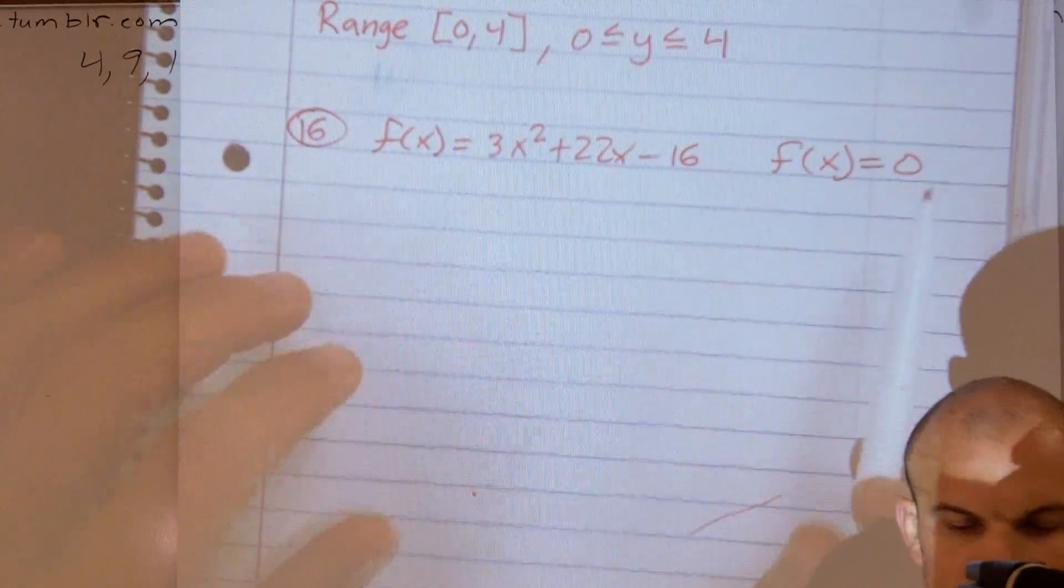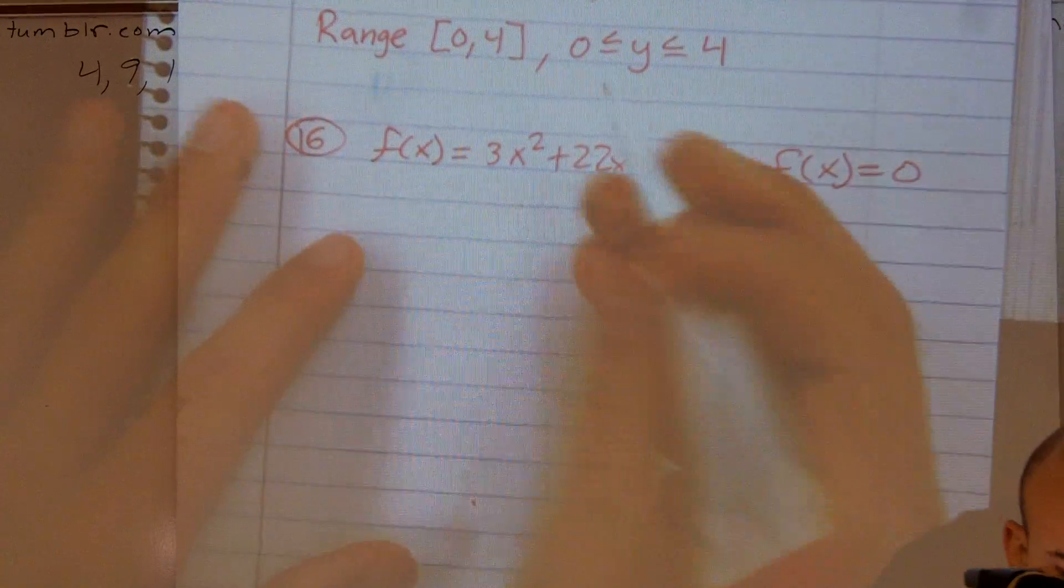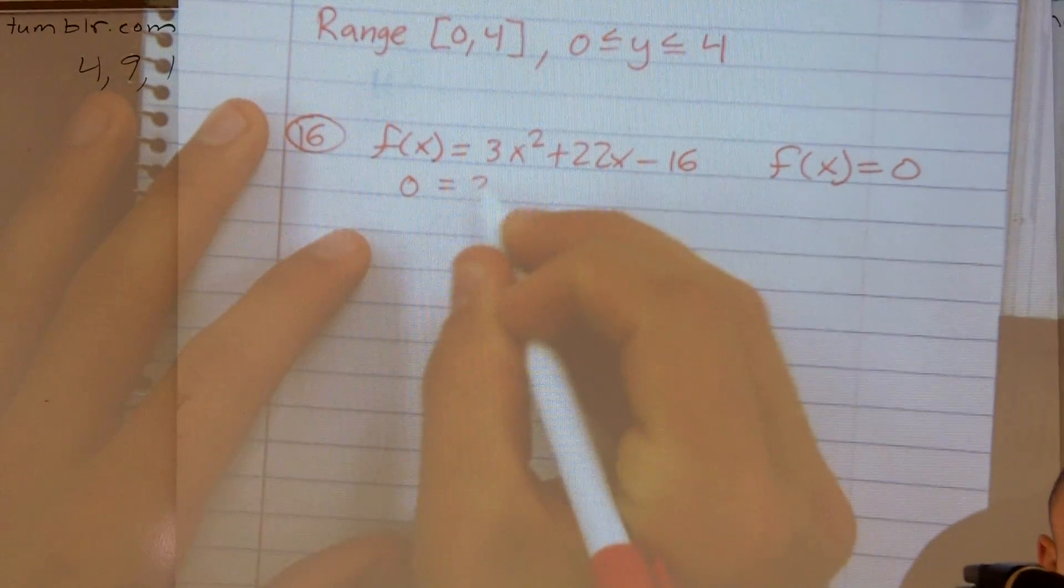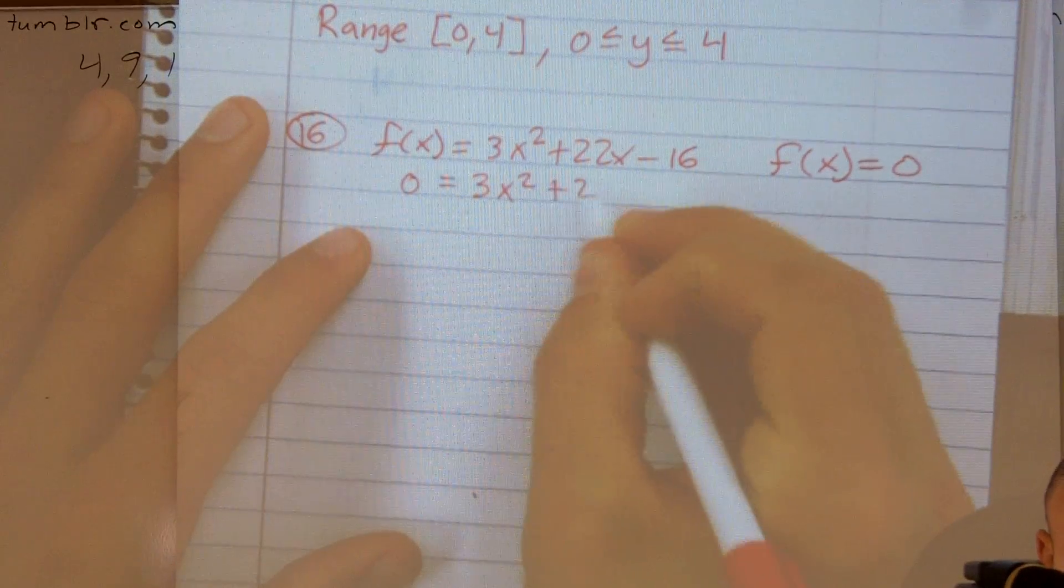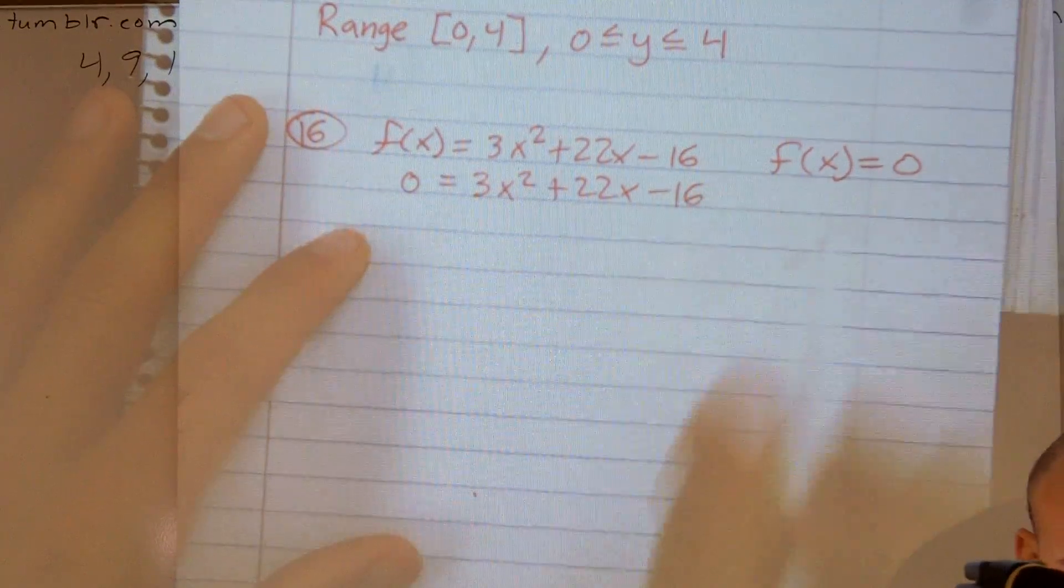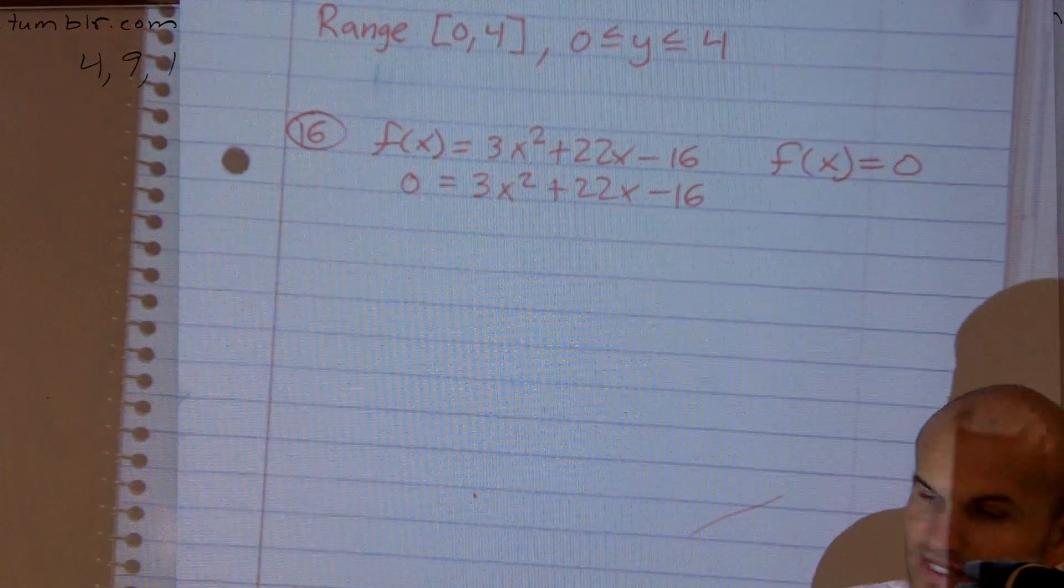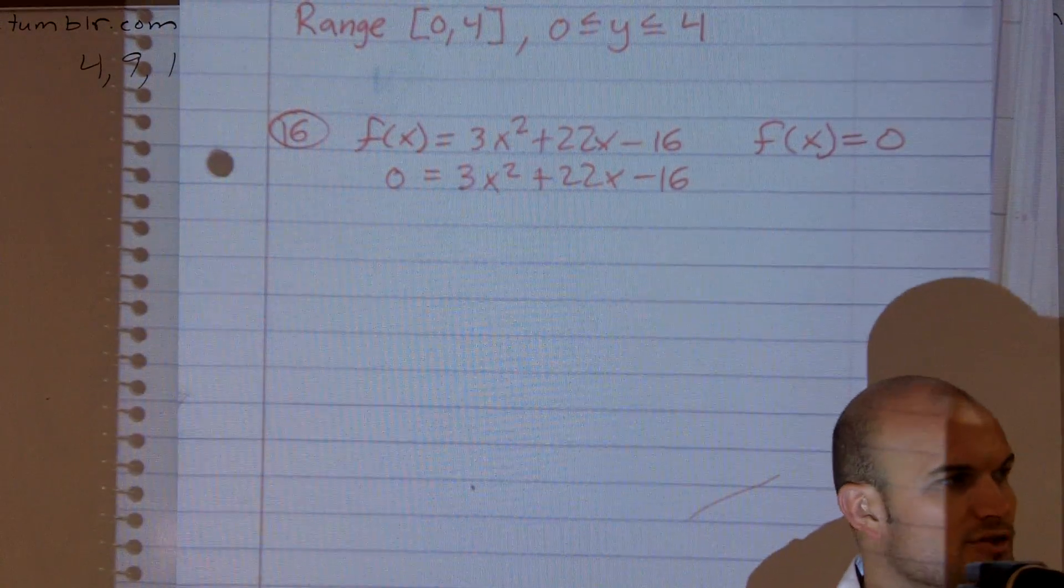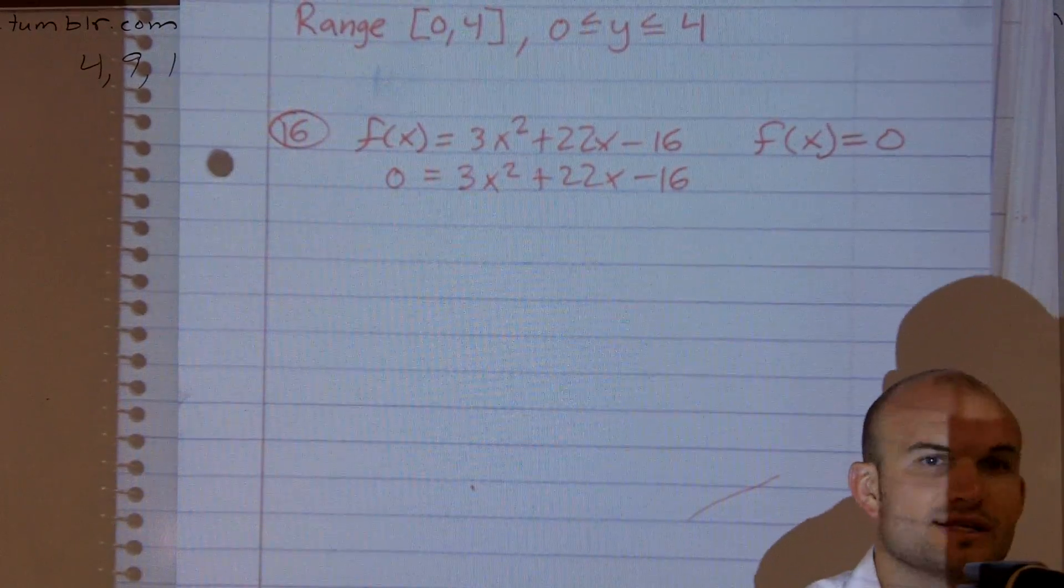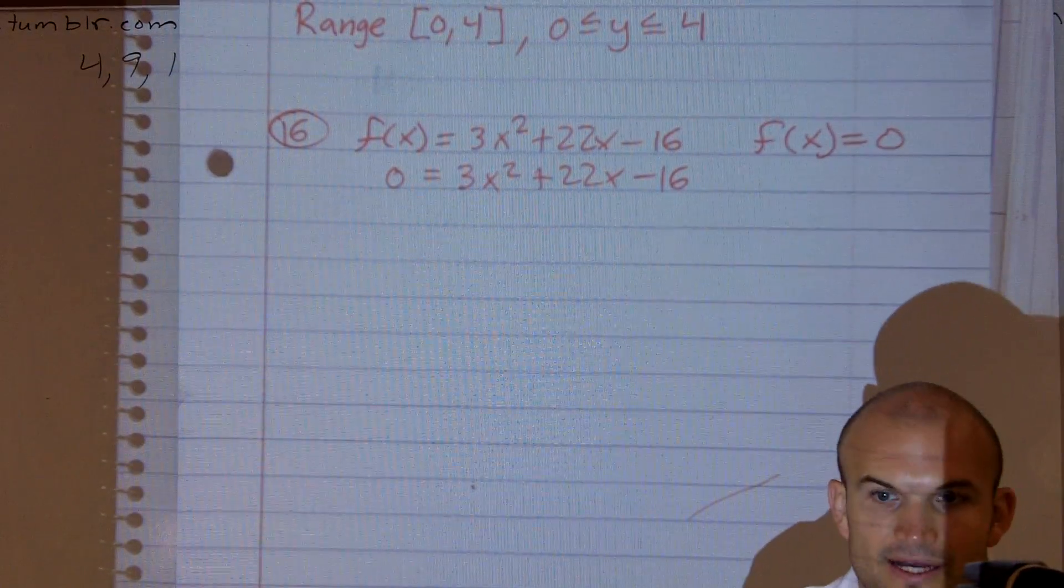So what I'm first going to do is I'm going to plug a zero in for f of x. And now I need to find the value of x. Now this gets a little bit difficult because when we're trying to do this, usually if we just solve for x it's pretty easy. You isolate the variable, right, get everything else on the other side and you're done.